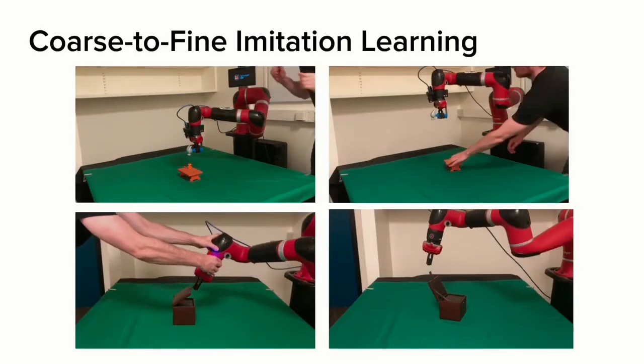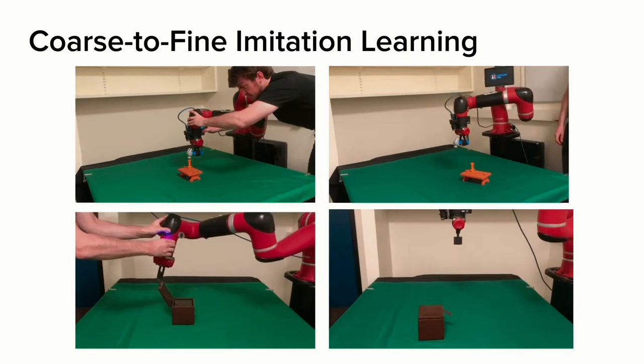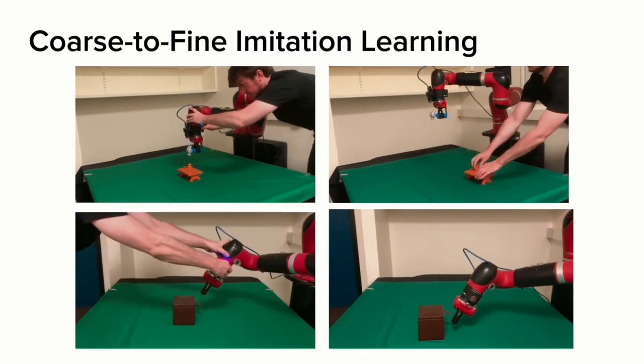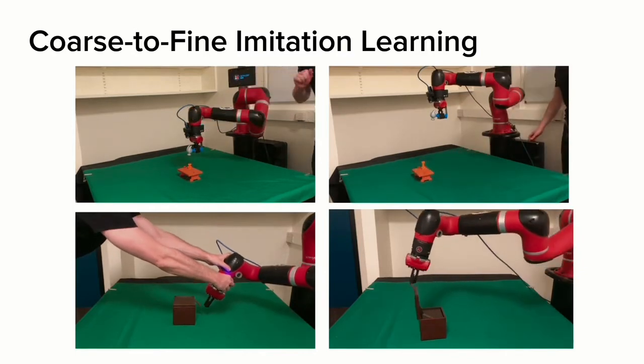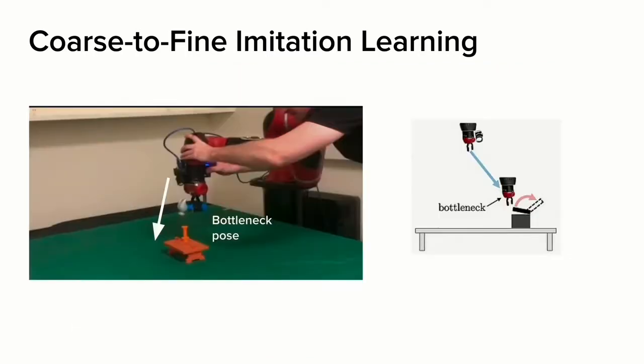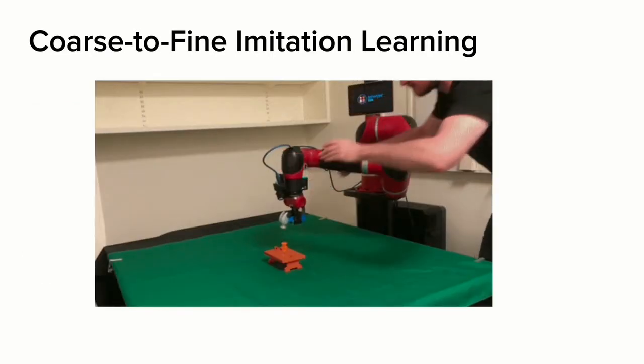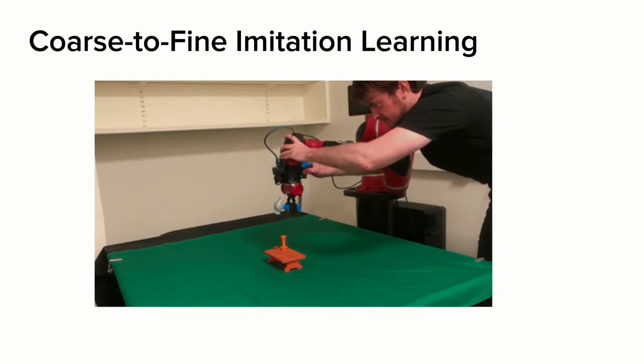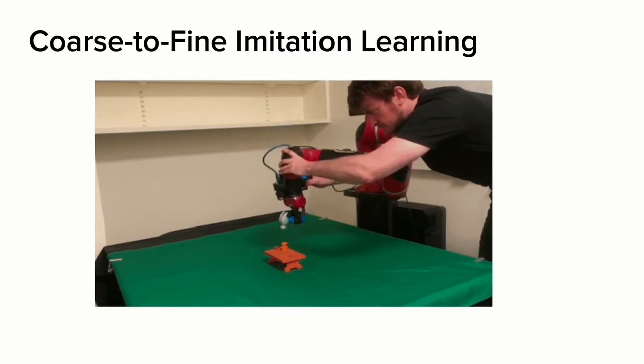Our method extends a Coarse-to-Fine imitation learning framework introduced at ICRA 2021. Coarse-to-Fine imitation learning shifts the imitation learning paradigm from learning the full policy to learning to align the end effector to the bottleneck pose. The bottleneck pose is the relative pose between the robot and the object at the beginning of the demonstration. The operator moves the end effector to provide a demonstration of how to interact with the object and hence solve the task, starting from that pose.